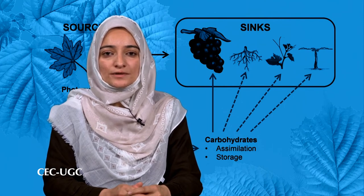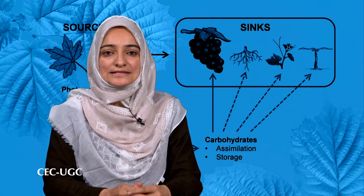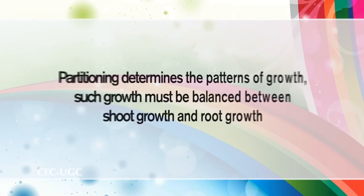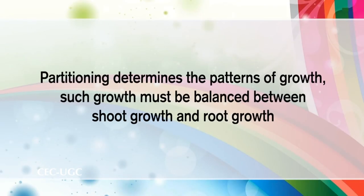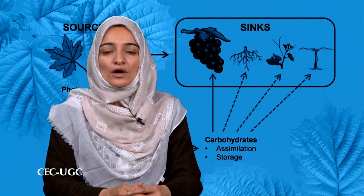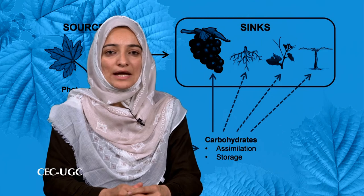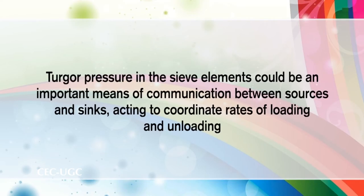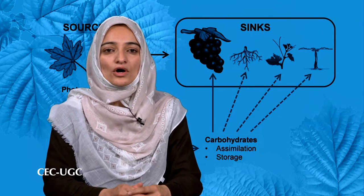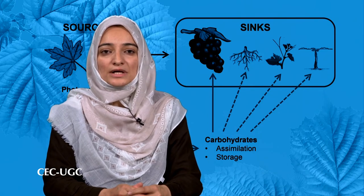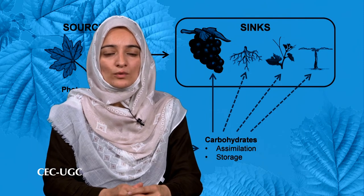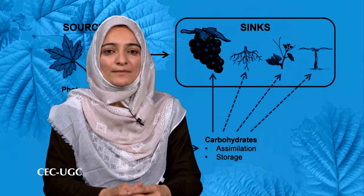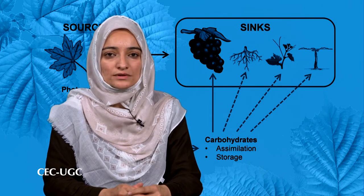Such competition determines the distribution of transport sugars among various sink tissues of the plant, at least in the short term. Events in sources and sinks must be synchronized. Partitioning determines the patterns of growth and growth must be balanced between shoot and root. An additional level of control lies in the interaction between areas of supply and demand. Turgor pressure in the sieve elements could be an important means of communication between sources and sinks, acting to coordinate rates of loading and unloading. Chemical messengers including plant hormones, nutrients such as potassium and phosphate, and even transport sugars themselves are also important signaling agents.